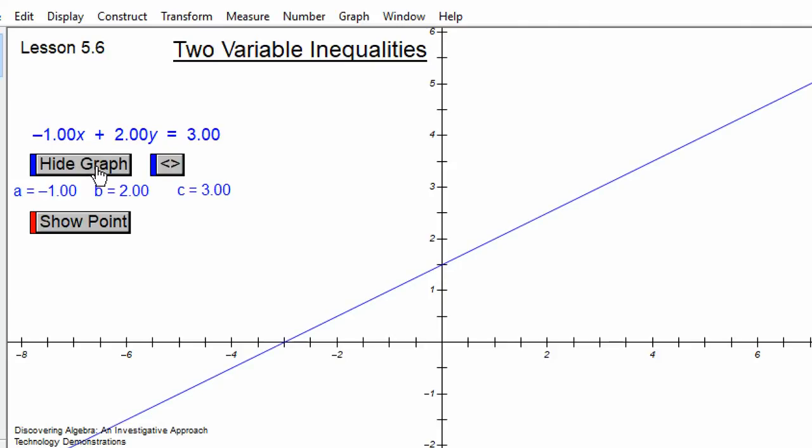So I'm going to show the graph. Originally it's equals. I hit this, it becomes greater than or equal to. Now it becomes greater than, less than, less than or equal to. Again, you're looking for patterns in what happens.